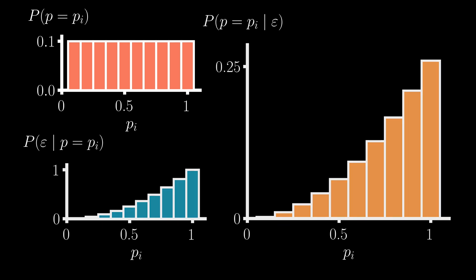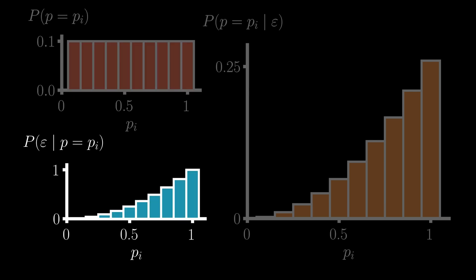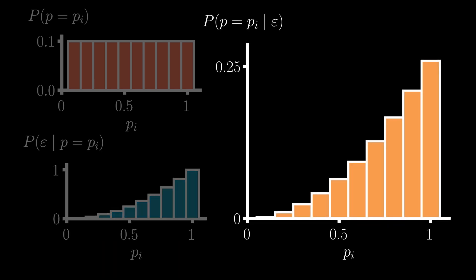At the start of our analysis, we thought that all considered values of p were equally likely. However, we realized that higher values of p were more likely to have led us to observing two consecutive sunny days, and so that fact has been reflected in our updated distribution for p.